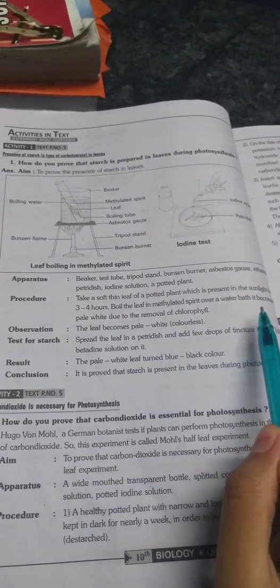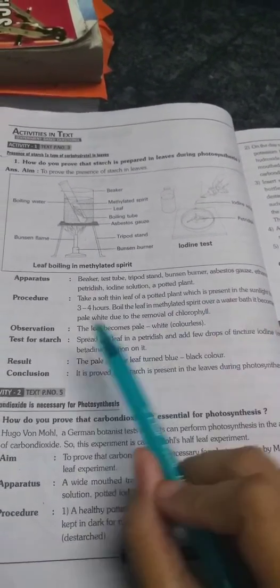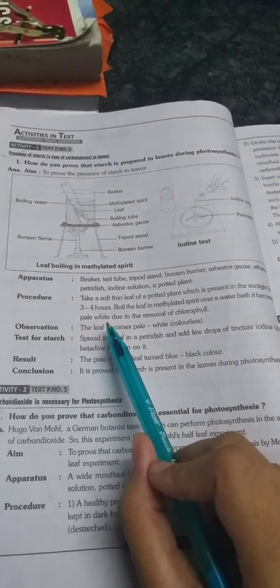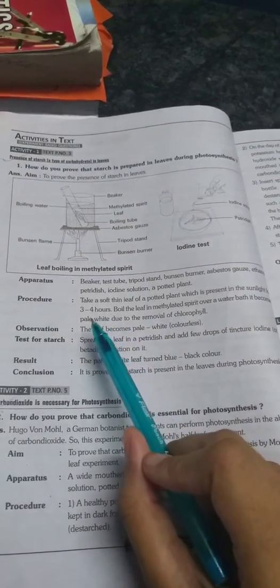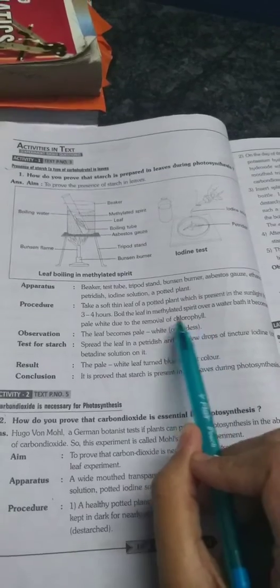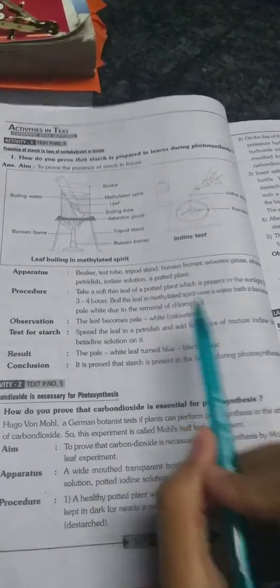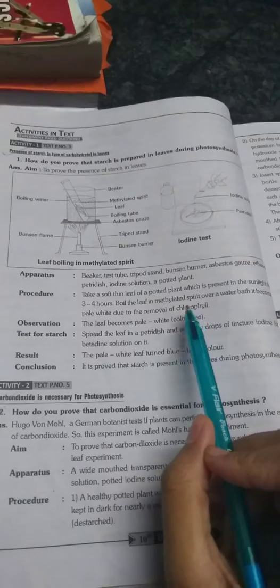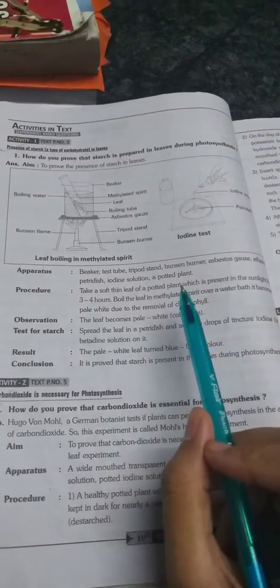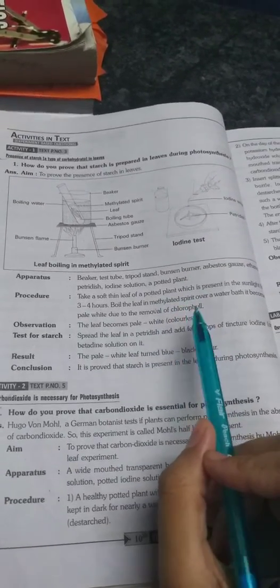Now we'll boil the leaf till the color of the leaf becomes pale white. Why will it become pale white? Because chlorophyll is removed from the leaf. We know because of chlorophyll the plant is green in color, but as chlorophyll is removed as we are boiling the leaf, the chlorophyll color will turn